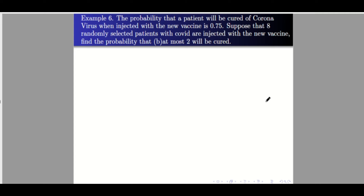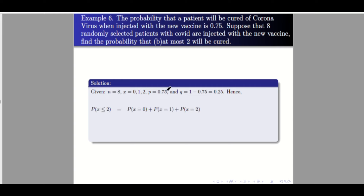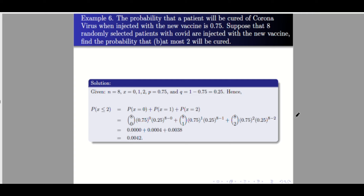Letter b: at most 2 will be cured. So x less than or equal to 2, giving us x values of 0, 1, and 2. We compute P(0) + P(1) + P(2). You may pause the video and use your calculator. Up to four decimal places, the answer is 0.0042.